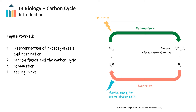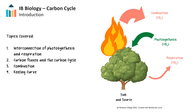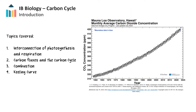This video is about various carbon fluxes within the Earth's carbon cycle, as the cycle plays a crucial role in maintaining the carbon balance in the environment. The topics in this key concepts video are the interconnectedness of photosynthesis and respiration, carbon fluxes in the carbon cycle, combustion, and the Keeling curve. These key concepts are some of the most important topics covered in the IB biology course.